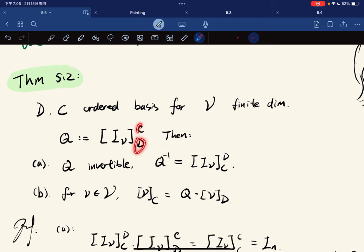If we just swap C and D, we get the inverse of Q. And for v in V, we have the coordinate representation of v with respect to C is just Q multiplied by the coordinate representation with respect to D.